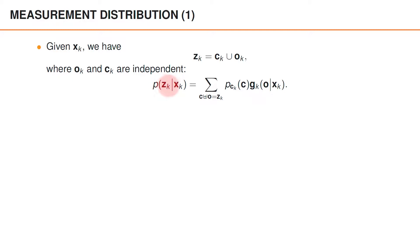The multi-object PDF of zk given xk is obtained by taking the sum over all mutually disjoint sets c and o whose union is zk, of the clutter distribution pk of c, times the object measurement distribution gk of o given xk.